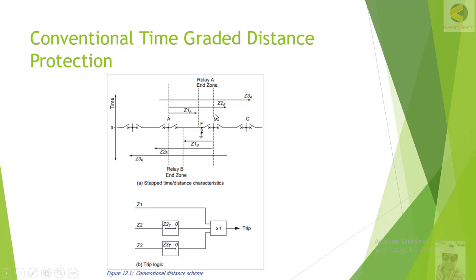If Zone 1 were set to 100% of the line between A and B, any fault on that line would trip in Zone 1, which is set to 0 milliseconds — that is, instantaneous. The 20% margin is kept to account for relay error, CT error, VT error, and variable arc impedance or ground impedance. With experience, it is known that underreaching and overreaching can each be 10 to 15%.